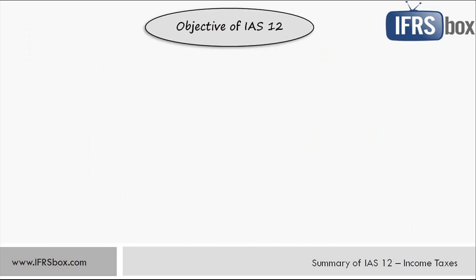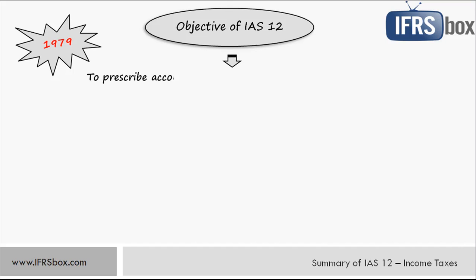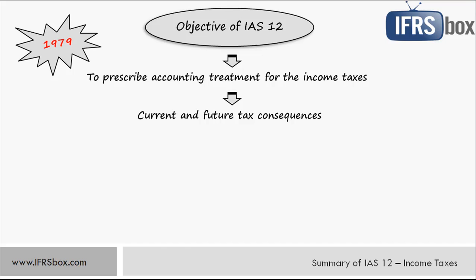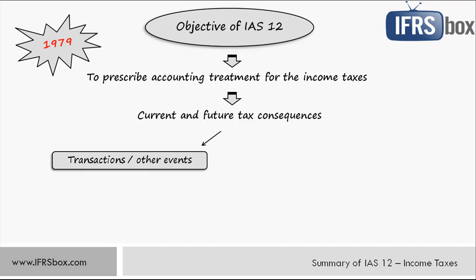Let's now go through the summary of the standard IAS 12 on income taxes. This standard has been here for a while, as it was issued in 1979 for the first time and then went through certain development until its current form as we know it now. The objective of IAS 12 is to prescribe the accounting treatment for income taxes. The principal issue here is to determine how to account for the current and future tax consequences of various transactions and other events of the current period that are recognized in the financial statements of an entity.